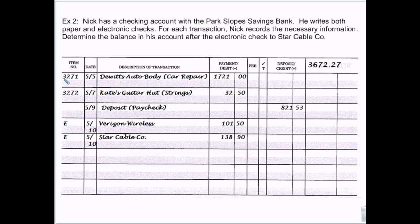Keep track of the check number — that's important. Check fraud most frequently occurs when you mail a check, somebody intercepts it, uses chemicals to remove the ink, and then puts in new information like their name and a new amount. So you want to know that check 3271 was written to DeWitt's Auto Body. If check 3271 shows up as written to Joe Smith, that's fraud — you can catch it because you kept records.